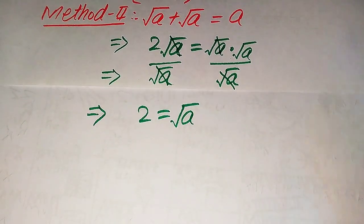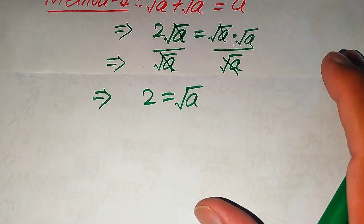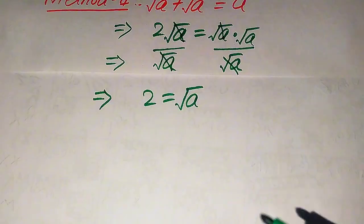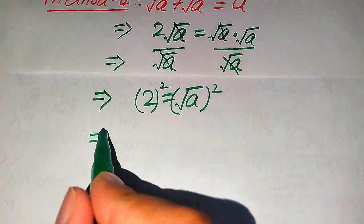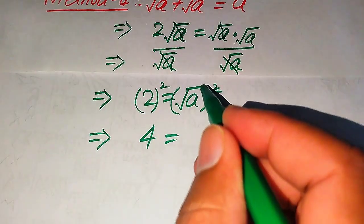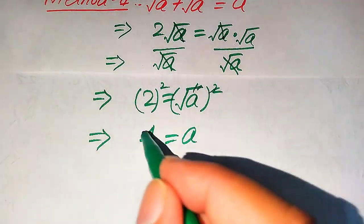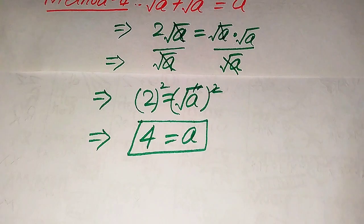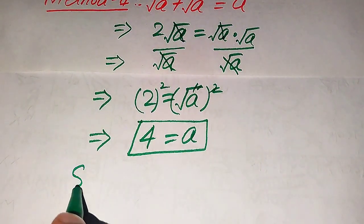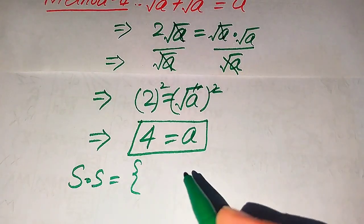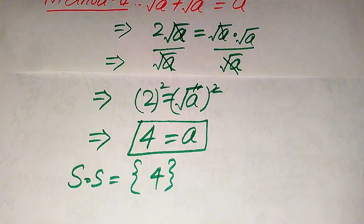To find the value of a, we remove the square root sign from the right hand side by squaring both sides. Two squared becomes four, and the square root is removed, giving us a equals four. In the second method we get only one value: a equals four. As verified in the first method, a equals four satisfies the given equation. So the solution set in the second method is that a equals four is the only solution. This is the final answer. Thank you so much for watching — please subscribe to my channel for more exciting videos.